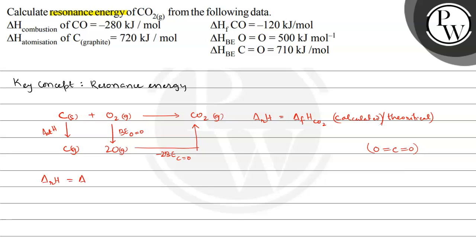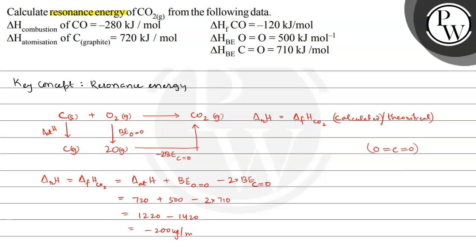The reaction enthalpy equals the atomization enthalpy of carbon plus bond enthalpy of O=O minus 2 multiplied by bond enthalpy of C=O. Substituting values: atomization enthalpy of carbon is 720, bond enthalpy of O=O is 500, and bond enthalpy of C=O is 710. So: 720 + 500 − 2×710 = 1220 − 1420 = −200 kJ/mol. This is the theoretical formation enthalpy of CO₂.